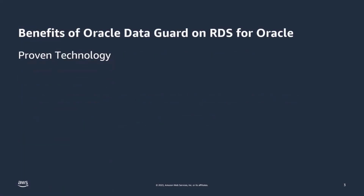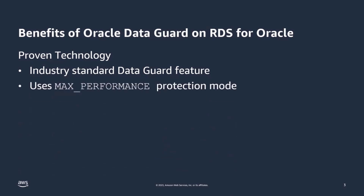So what are some of the benefits of Oracle Data Guard on RDS for Oracle? It is a proven technology — something that all Oracle DBAs know and love. It really is the standard for providing disaster recovery and high availability for single-instance Oracle Enterprise Edition databases, as well as providing DR for Oracle RAC systems. Within the RDS for Oracle environment, when we configure Oracle Data Guard for you, it's using max performance mode under the covers, so it's very low overhead and also provides very good disaster recovery capabilities.